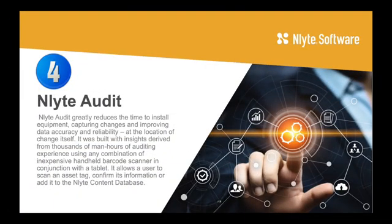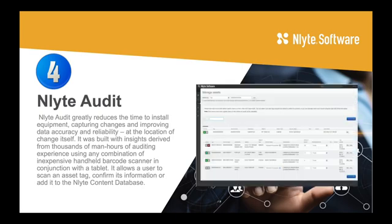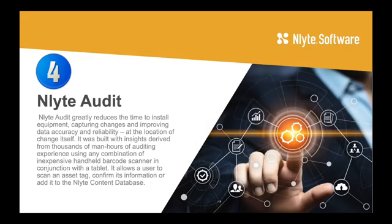The fourth highest sold connector or module for InLite solutions is InLite Audit, and this module does exactly what it sounds like. It's designed for the audit process and allows you to scan audits using an inexpensive handheld barcode scanner or a tablet. It allows the user to scan in asset tags, confirm that information, and add it to the InLite content database — great for audits and proving compliance.